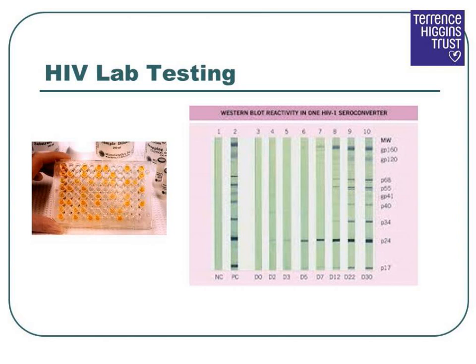The other kind of test used in most parts of the world is called a Western blot. The Western blot isolates specific HIV antibodies which are unique to the HIV virus. As this test is specific to HIV, it is able to effectively rule out any false positive results.